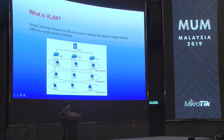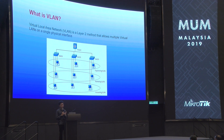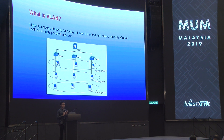What is VLAN? VLAN is a layer 2 method that allows multiple virtual LANs on a single physical interface, or we can call it layer 2 tunneling. A usual Ethernet protocol usually has one collision domain, but VLAN can separate it into several collision domains and control the broadcast storm.